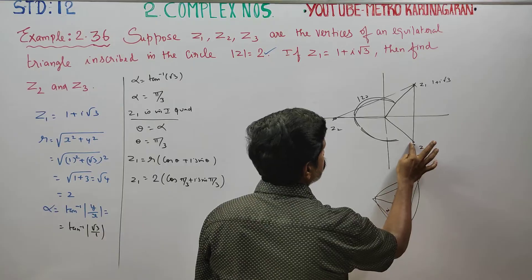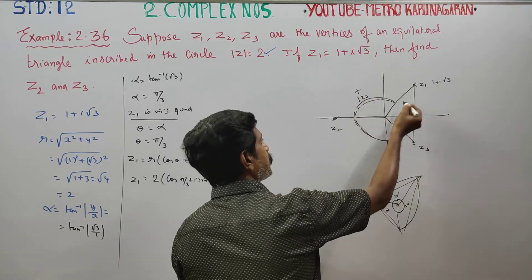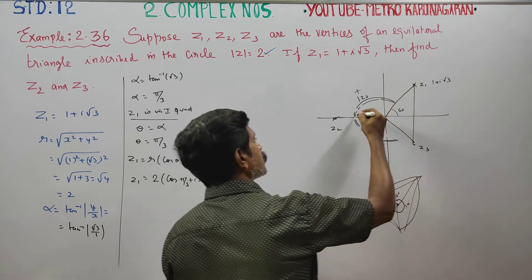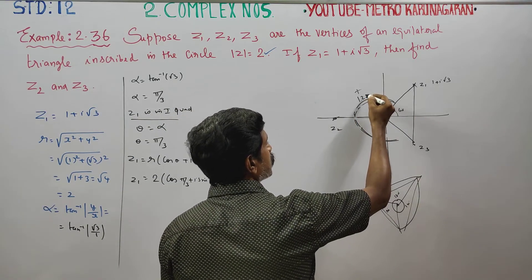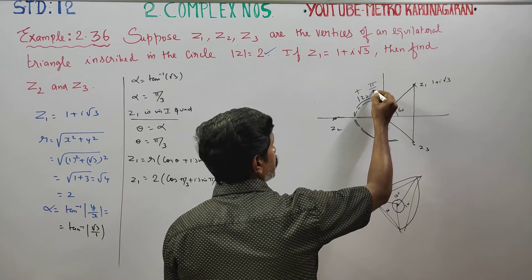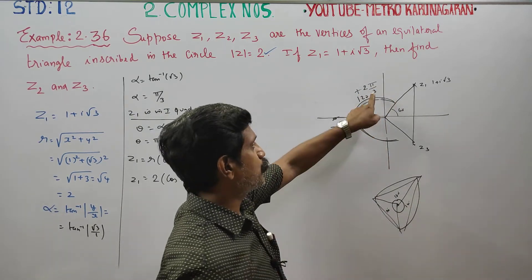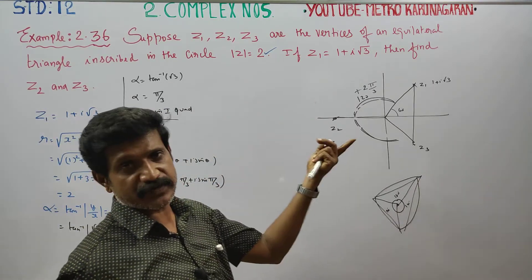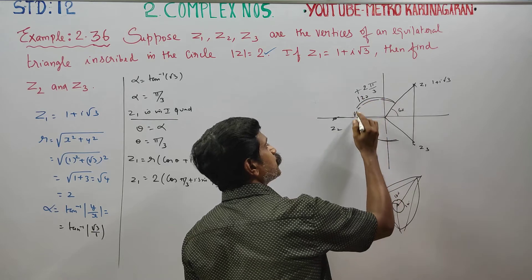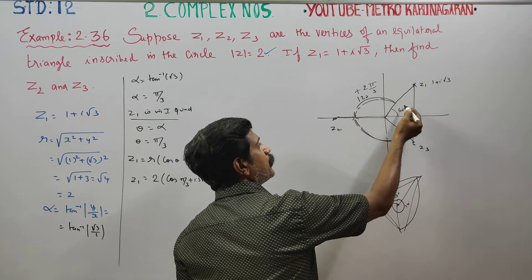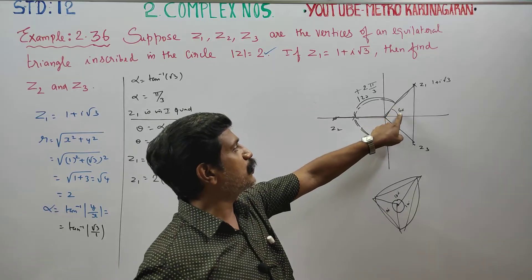You can shift the argument to get z2. If you move the degree, you can move the point to z2. Just add 120 degrees — that is 2 pi by 3 — to the existing argument. The argument of z1 is pi by 3, which is 60 degrees. Adding 2 pi by 3 gives the new argument for z2.